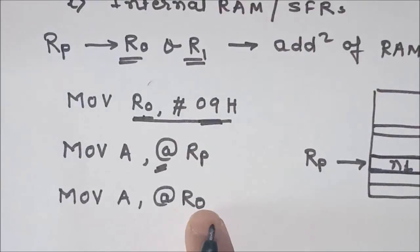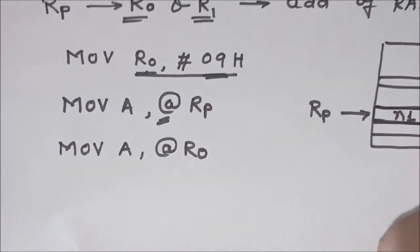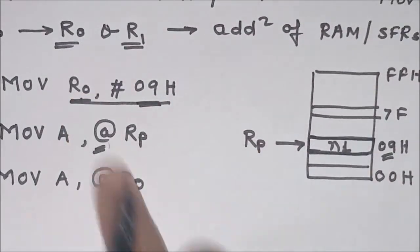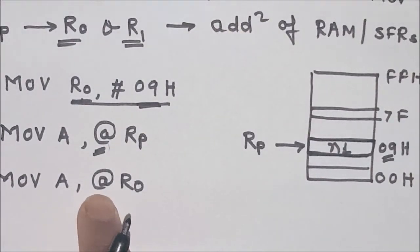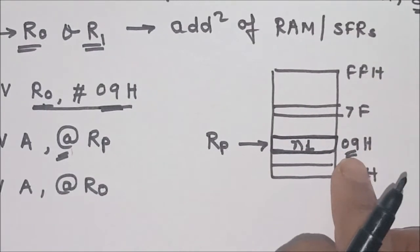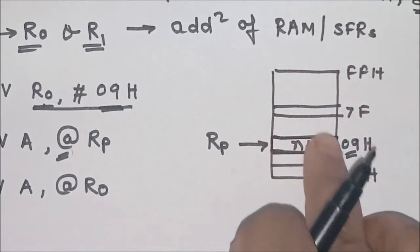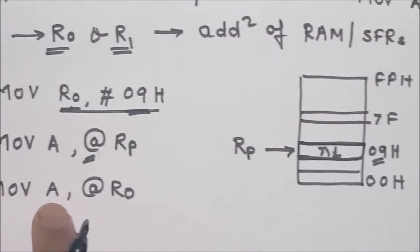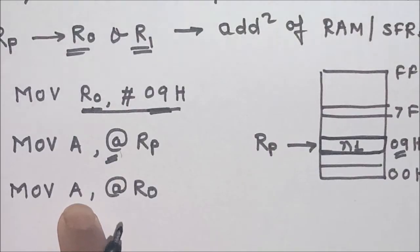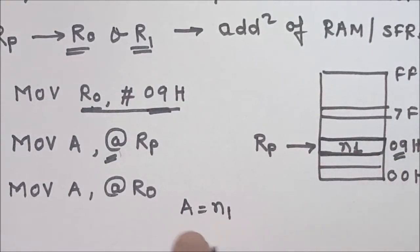@R0 means R0 is a pointer to a memory location, and R0 points to 09H because 09H is stored in register R0. So what will happen in this instruction is that the microcontroller will go to the memory location pointed by register R0, read the data stored at that memory location — which is N1 — and store it in the destination register, that is the accumulator. After execution of this instruction, whatever data is stored at 09H will be stored in the accumulator.